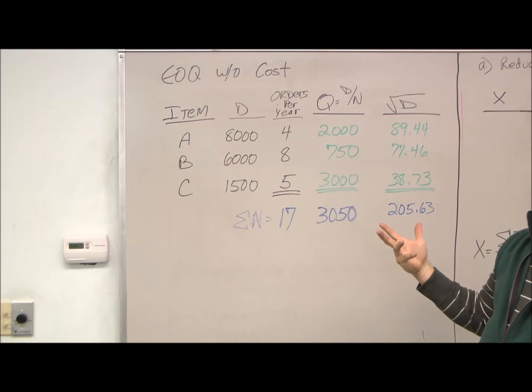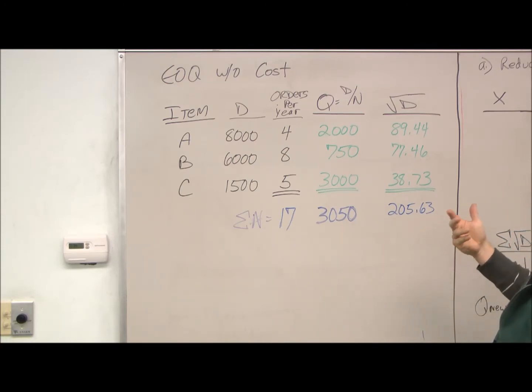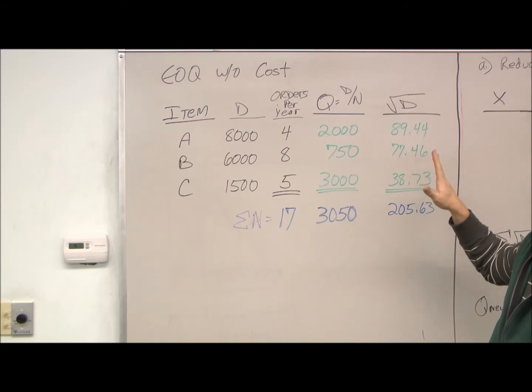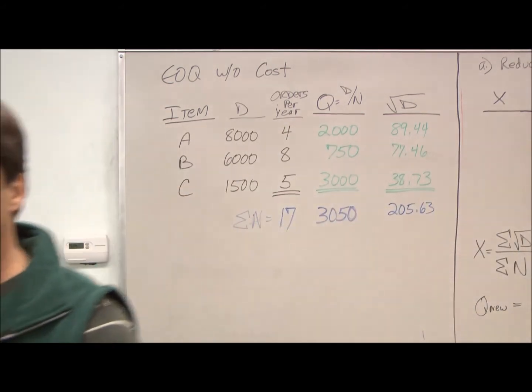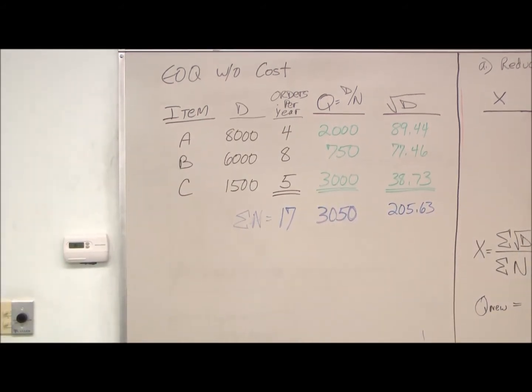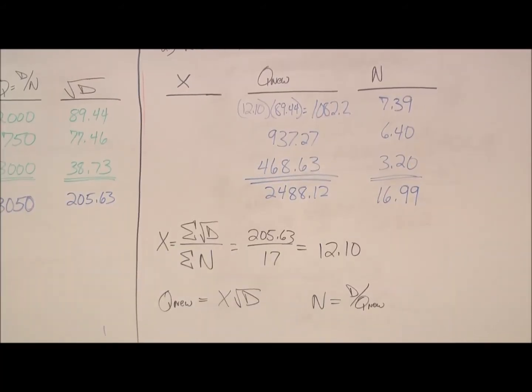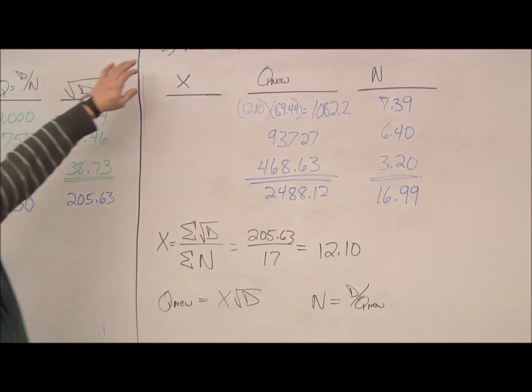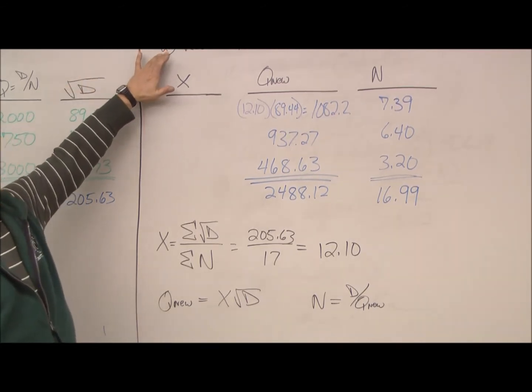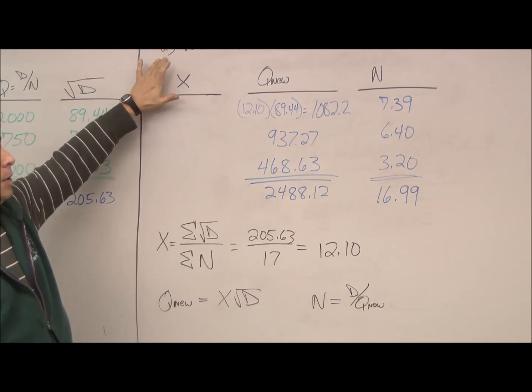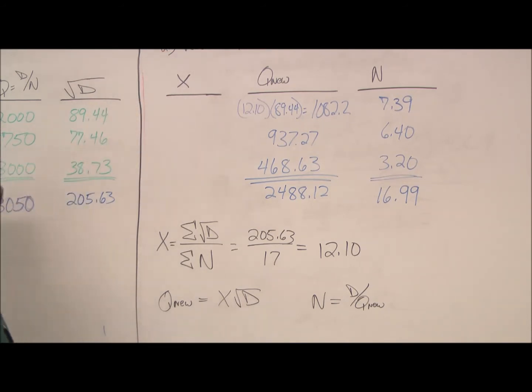Both alternatives that we have of reducing holding costs or reducing ordering costs begin with the same format. So, whichever way you can reduce costs, you always start the same. Alright, so the first one we're going to look at is how to reduce the holding costs while the ordering costs remain constant.